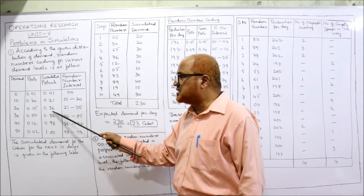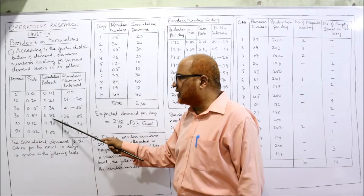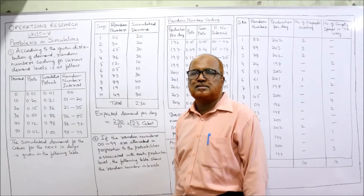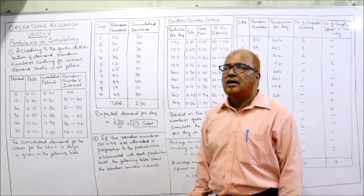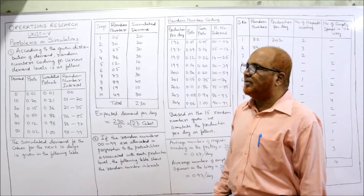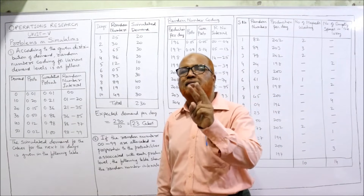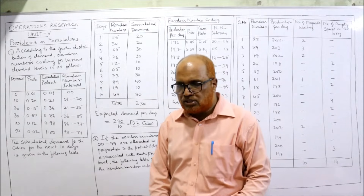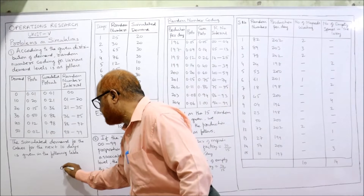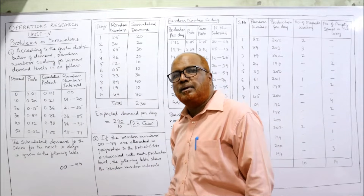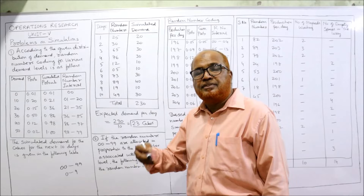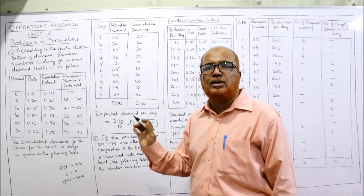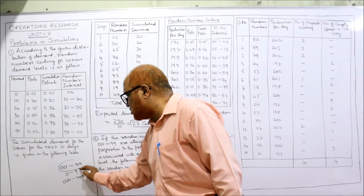Continuing the cumulative probabilities: 0.21 plus 0.15 equals 0.36; 0.36 plus 0.50 equals 0.86; 0.86 plus 0.12 equals 0.98; 0.98 plus 0.02 equals 1.00. Since the random numbers given in the problem are two-digit, our random number range will be from 00 to 99.